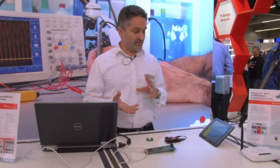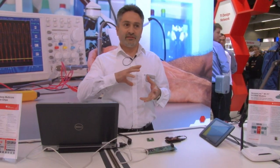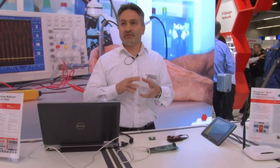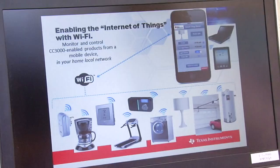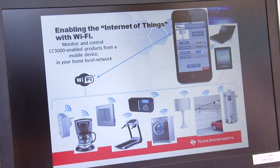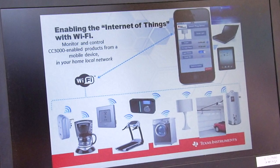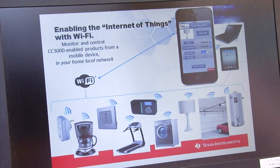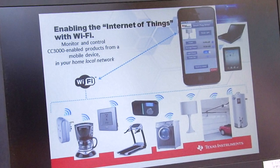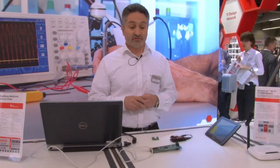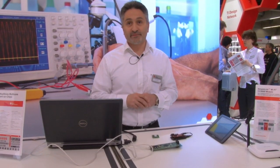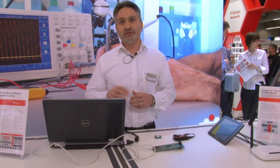This is about looking at the home environment, the building environment, the industrial environment and seeing how much MCUs are actually in electronic devices, and being able to connect them not just via wires but also via wireless standards that are already pervasive in those particular environments. In this case, we're talking about Wi-Fi, so 802.11 B and G, for example.